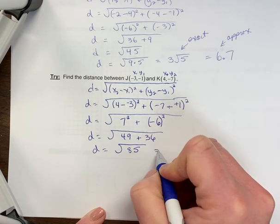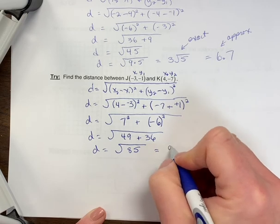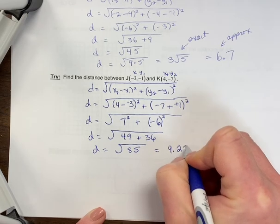If you did put square root of 85 in your calculator, you would get 9.22.